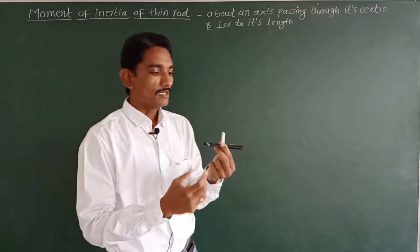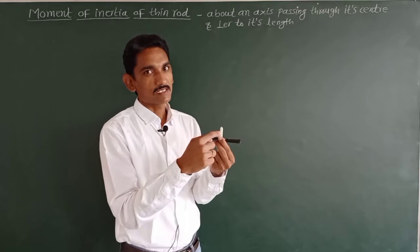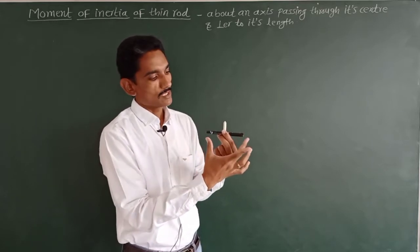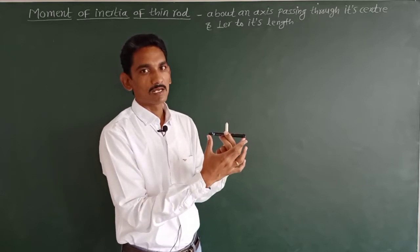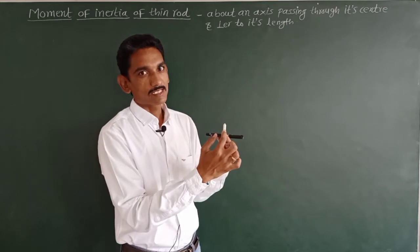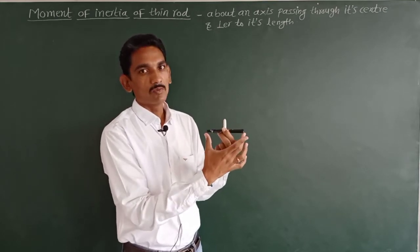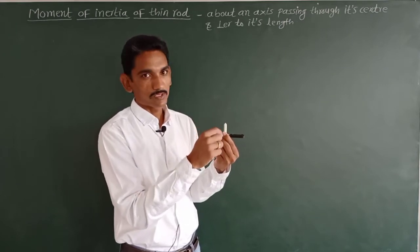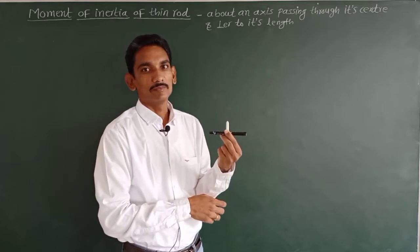Now we have to determine the moment of inertia of this rod about this axis passing through the center. Suppose capital L is the length of this rod and capital M is the mass of this rod, and the axis of rotation is exactly passing through its center and perpendicular to the length of the rod.